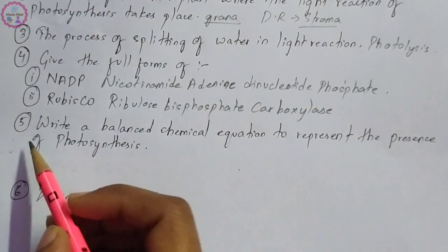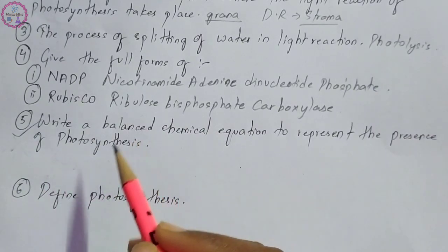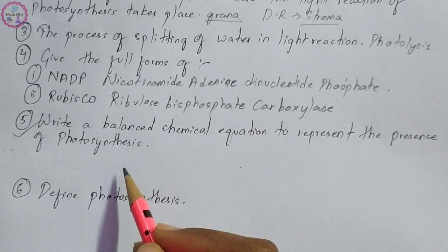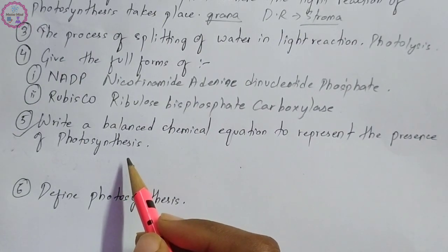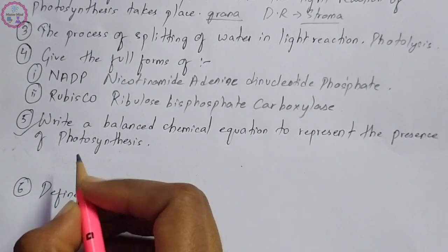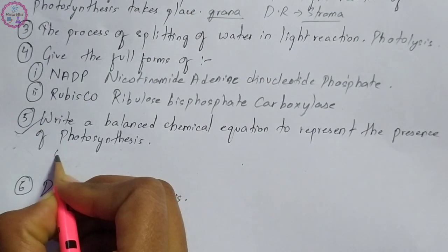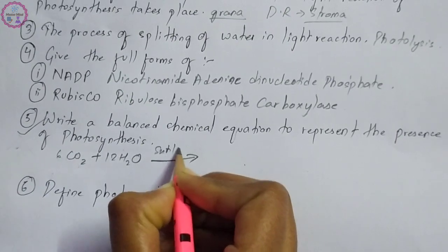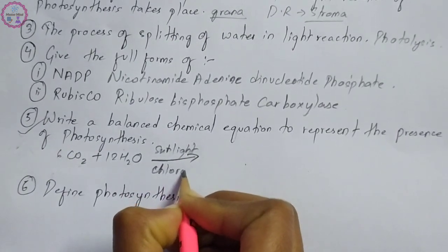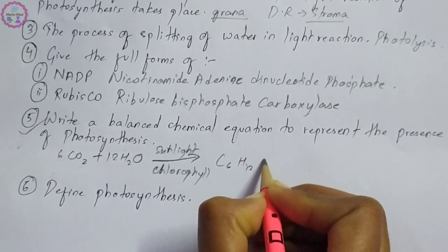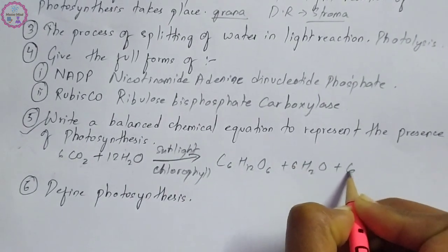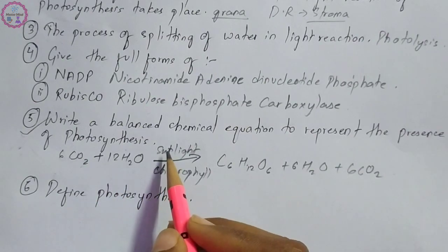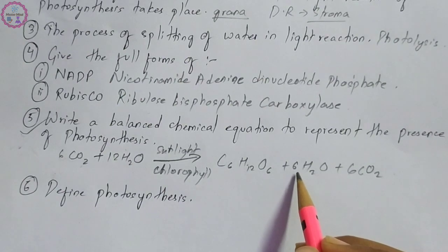Moving on to question number five, which is very important and is repeated most of the time from this chapter. You have to write the overall balanced chemical equation for the process of photosynthesis. The overall chemical equation is: 6CO₂ + 12H₂O, in the presence of sunlight and chlorophyll, gives C₆H₁₂O₆ + 6H₂O + 6O₂. Oxygen is released as a byproduct of photosynthesis.